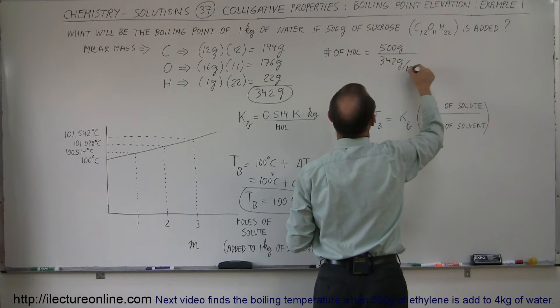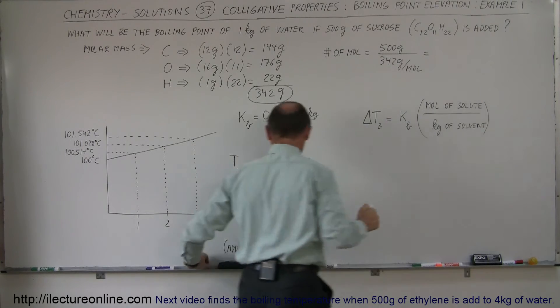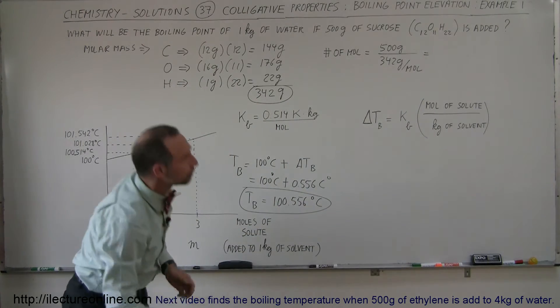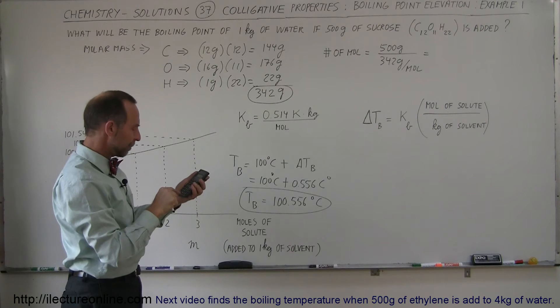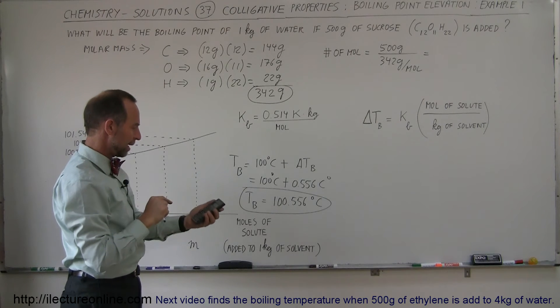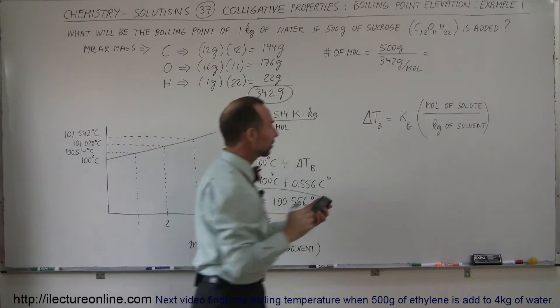So that would be the molar mass. So we divide by the molar mass, and that gives us the number of moles. Of course, for that, we need a calculator. So we have 500 divided by 342, and we get 1.462 moles.